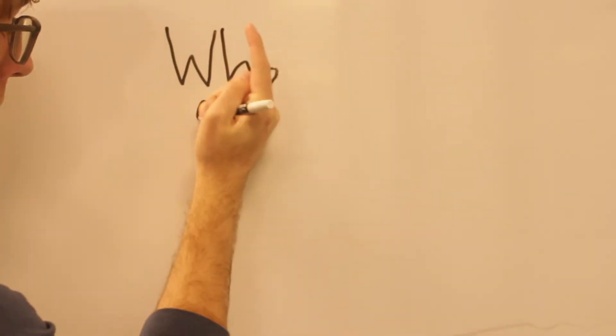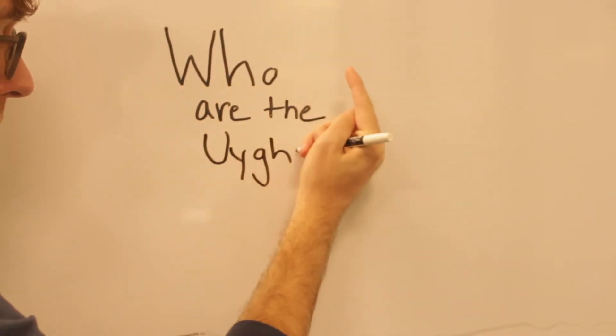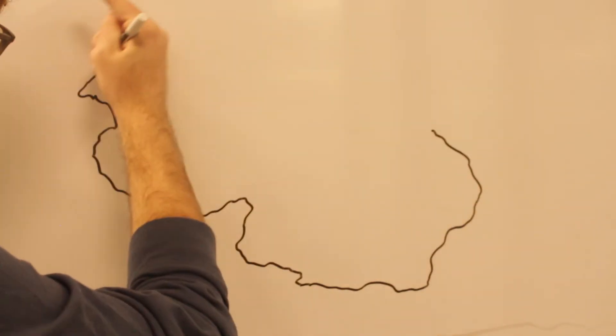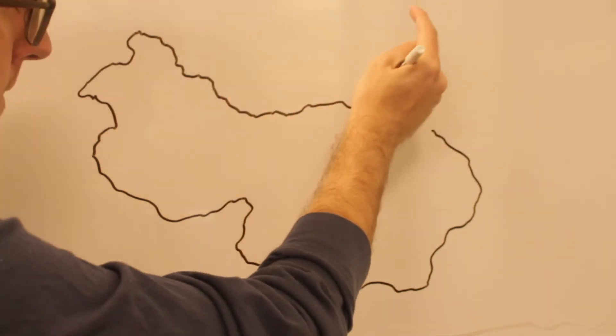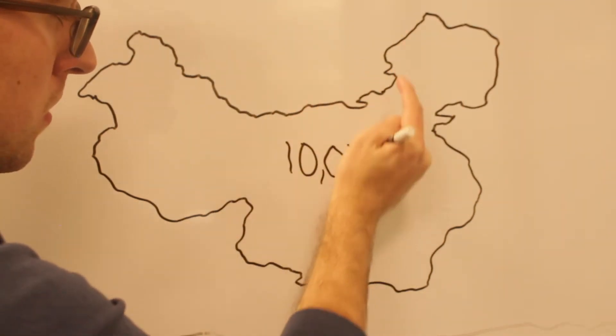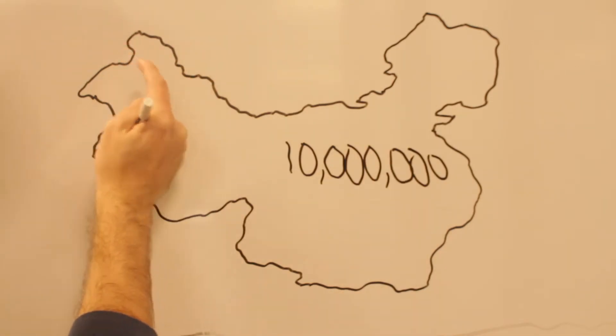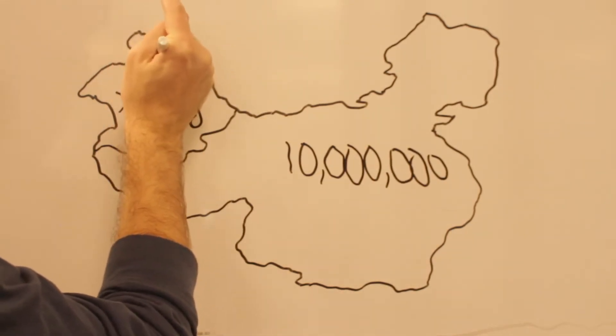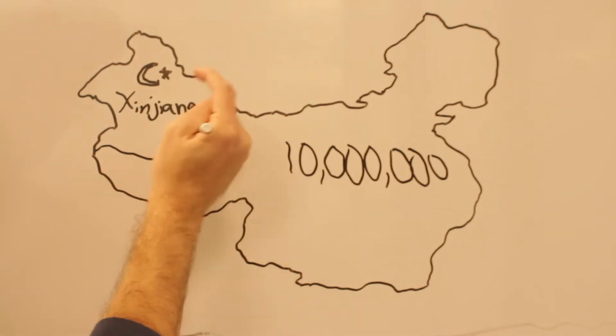I want to start with a question. Who are the Uyghurs? Well, they roughly number 10 million within China proper. Ethnically they are Turkic, they speak Uyghur, and most practice Sufi Islam. They have achieved statehood twice after the fall of the Qing Dynasty and are largely in Xinjiang.